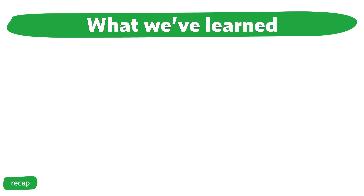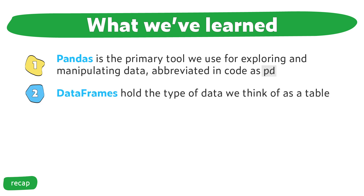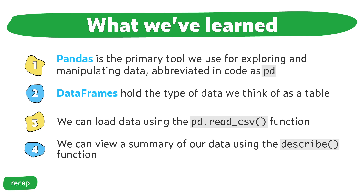After everything we've covered in this video, combined with what's on the Kaggle Learn basic data exploration course, here's a summary of what we've learned today. One: Pandas is the primary tool we use for exploring and manipulating data, abbreviated in code as PD. Two: Data frames hold the type of data we think of as a table. Three: We can load data using the pd.read_csv() function. And we can view a summary of our data using the describe function.